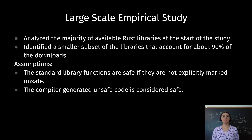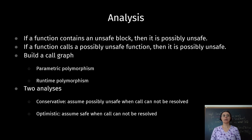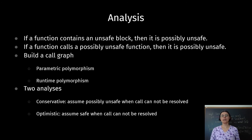We executed a large-scale empirical study by analyzing the majority of available Rust libraries at the start of the study. From these libraries, we identified a relatively small subset of about 500 crates that account for 90 percent of the downloads. The assumptions in our study are that standard library functions are safe unless explicitly marked unsafe, and that compiler-generated unsafe code is safe. To understand how unsafe dependencies influence the safety of the Rust ecosystem, we define a function as possibly unsafe if it has unsafe code present in its call graph. Since Rust has polymorphic and runtime polymorphism, it is impossible to precisely determine the call graph. Thus, we implement two analyses: whenever we can't resolve a function call, in one analysis we assume it's unsafe, and in the other we assume it's safe.